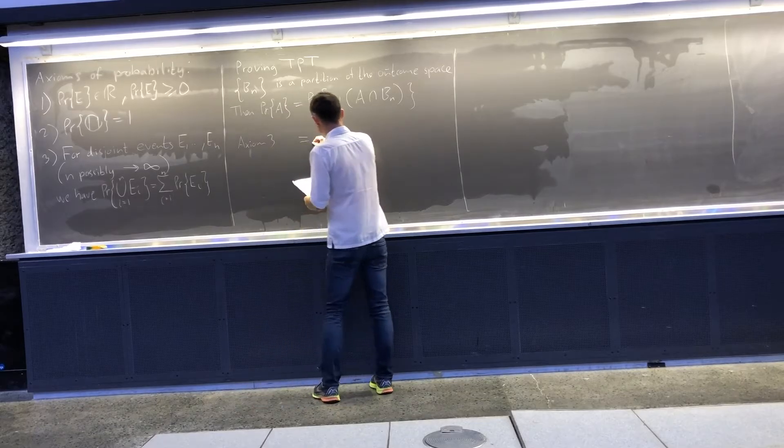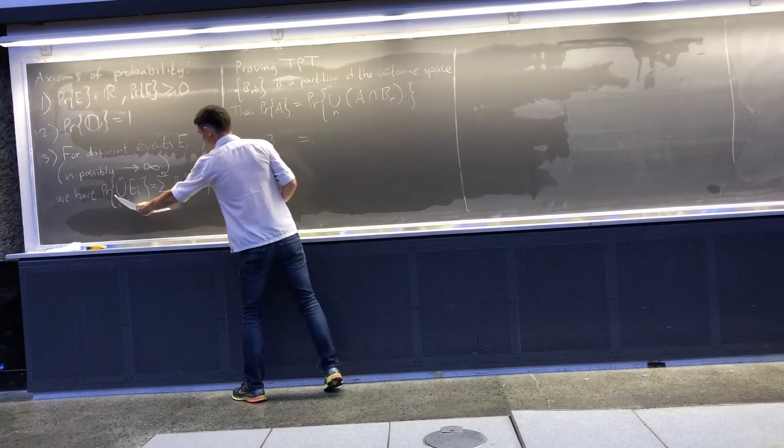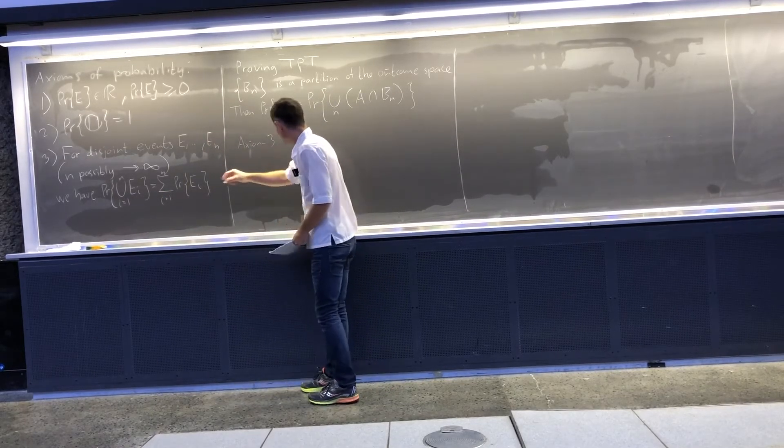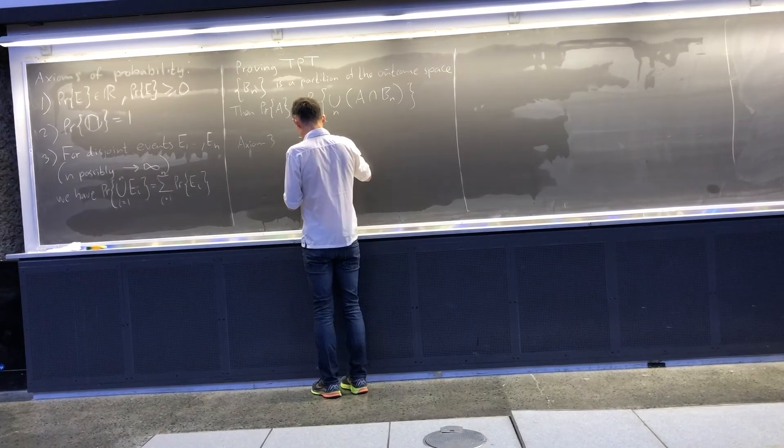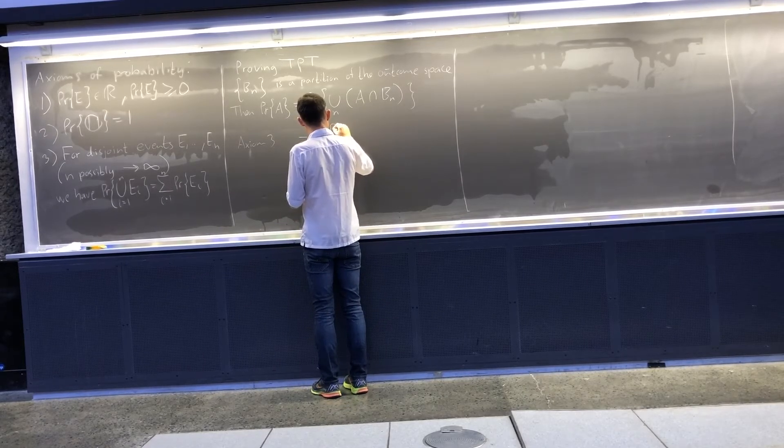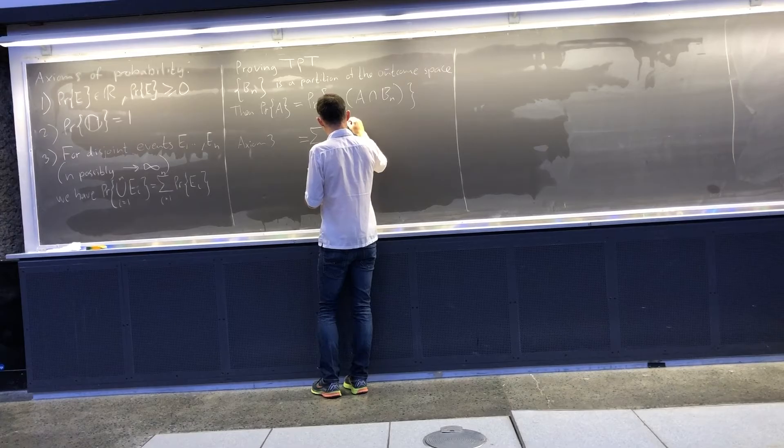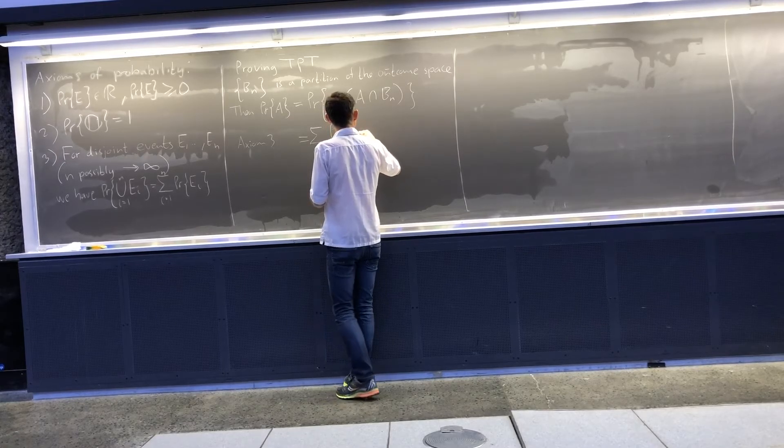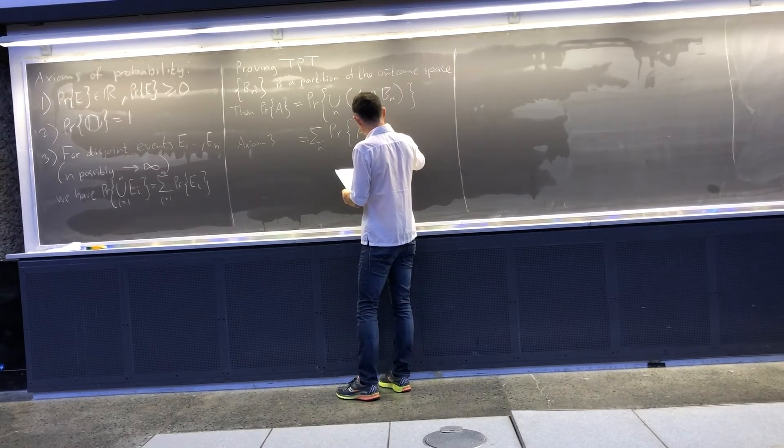To derive this as a sum. I have this kind of union here. And I want to sum it out. It's going to be sum over n, the probability of A intersection Bn.